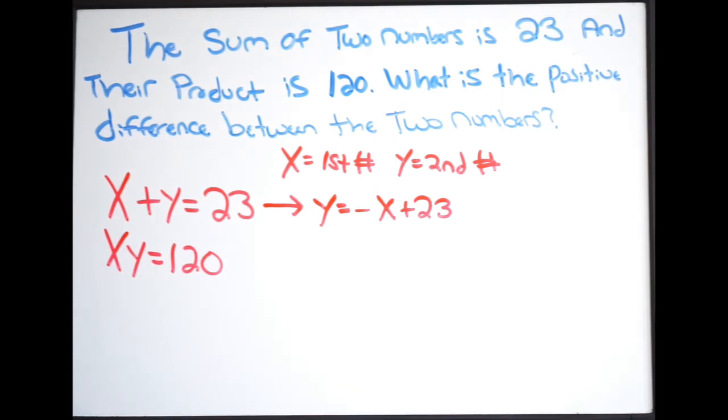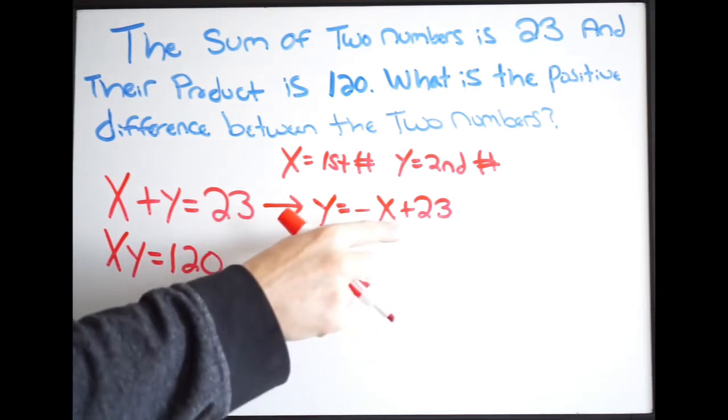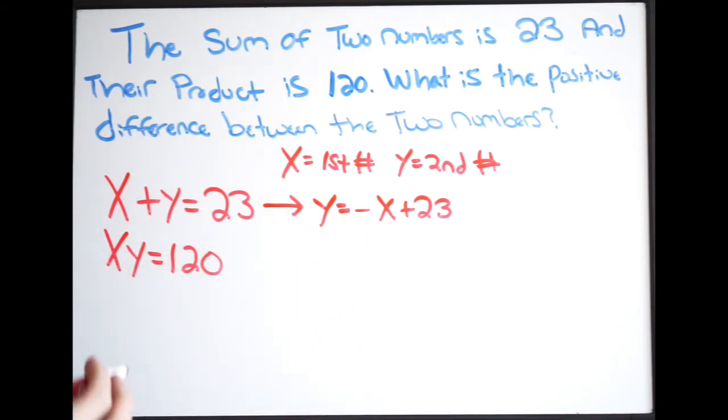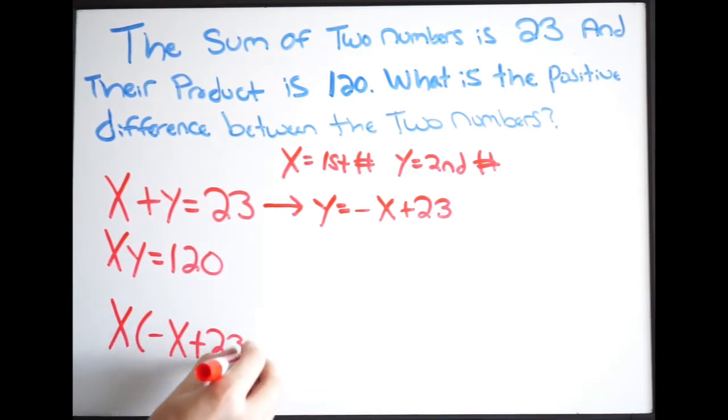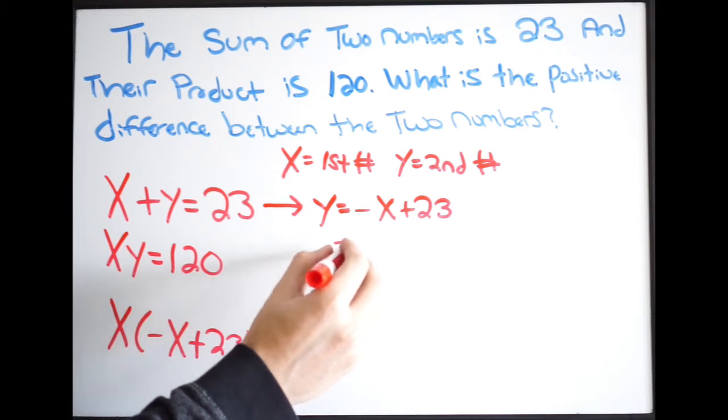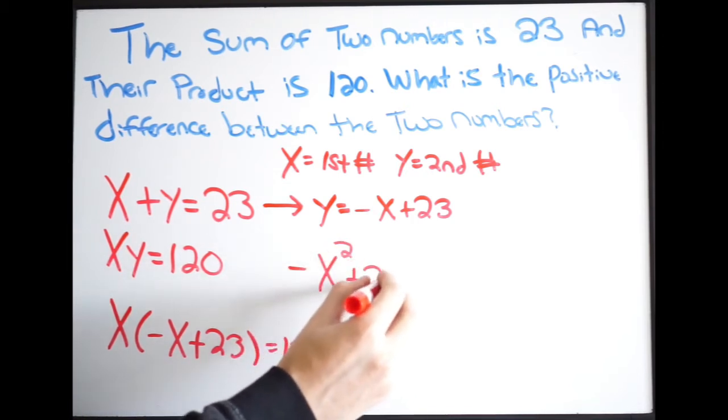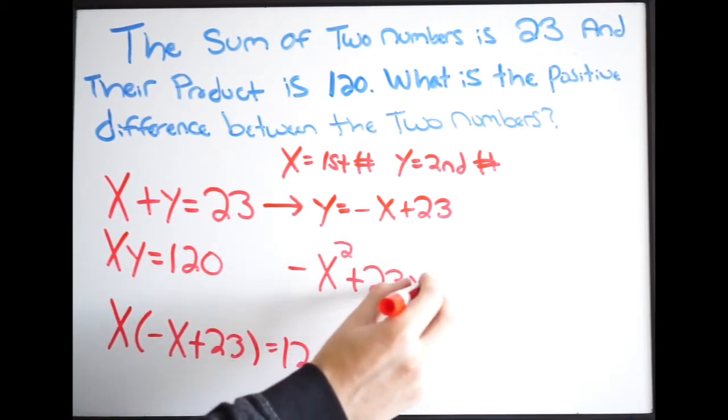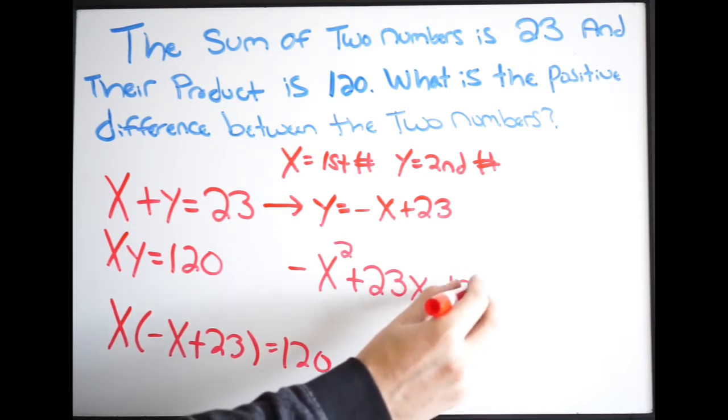Now I can use substitution. So looking at my second equation here, wherever I see a y, I'm going to plug in what I have here. So just rewriting this, I have x. Now here's my y, so I put in parentheses negative x plus 23, and this is going to be equal to 120. So let's go ahead and distribute the x. When we do that we get negative x squared plus 23x. This will be equal to 120.